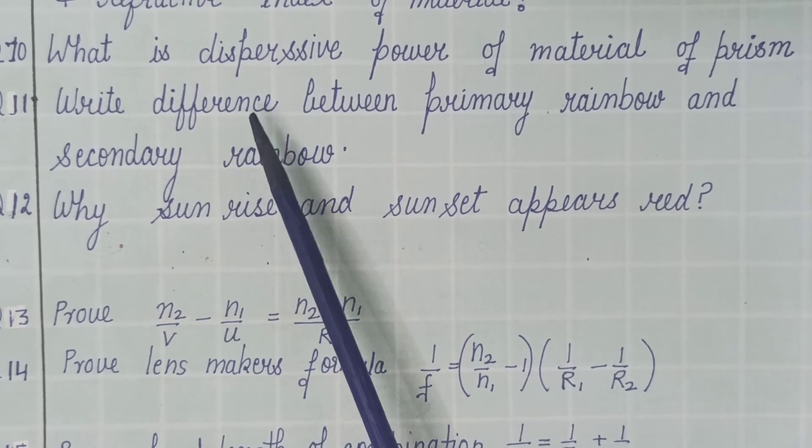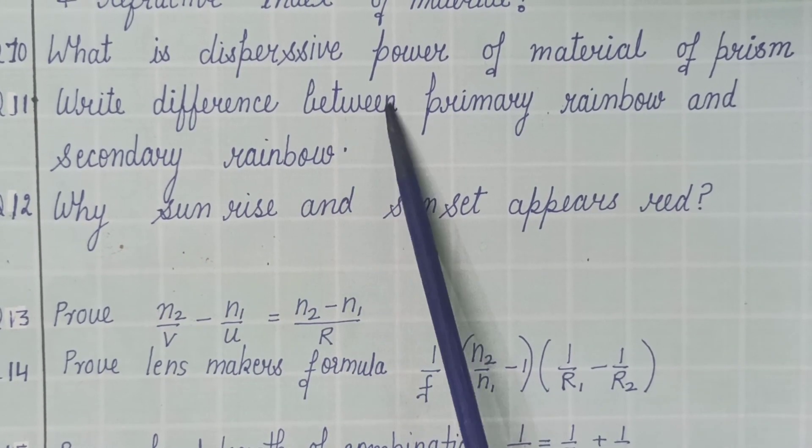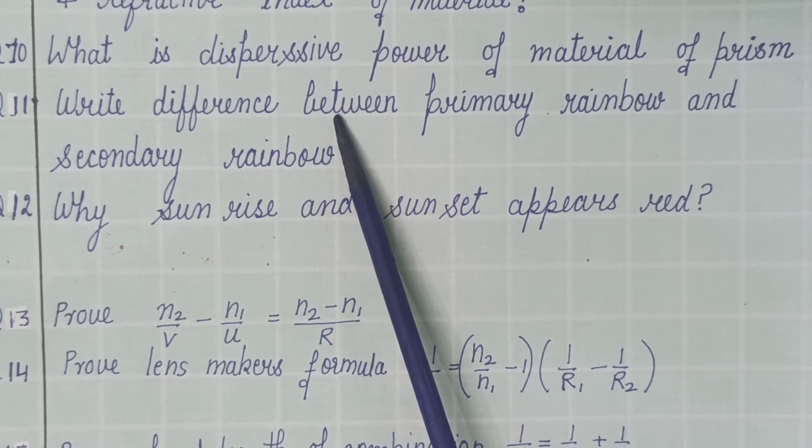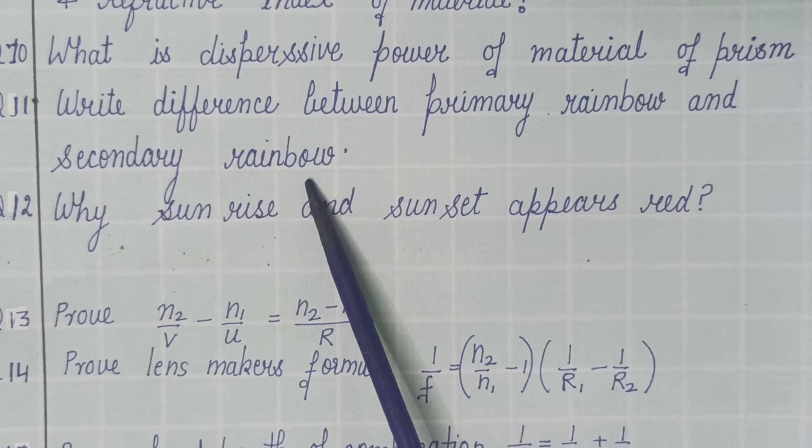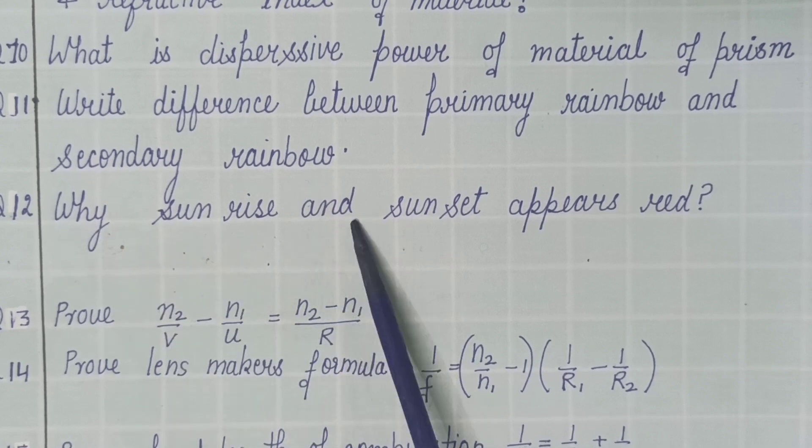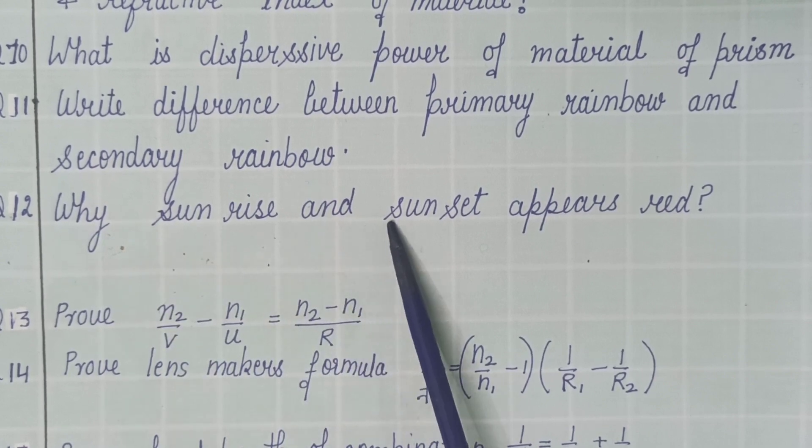Then this question, after 2018, again this question is having high probability to be in the paper. Write difference between primary rainbow and secondary rainbow. And this question is not being asked for three to four years, five years I should say.